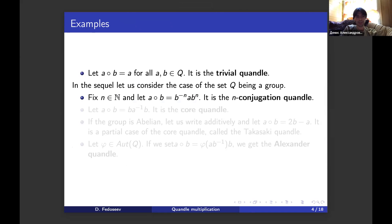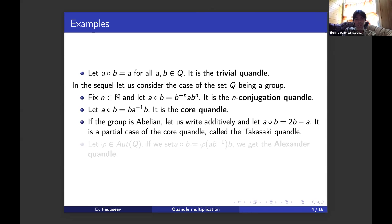Let's begin with some examples. The most well-known and well-used quandels. The first one is the trivial quandel, where the operation returns just the left argument for all pairs of A and B. Then we'll concentrate on the case where the set Q is a group. We have the n-conjugation quandel, where the operation is conjugation by the nth power of B.